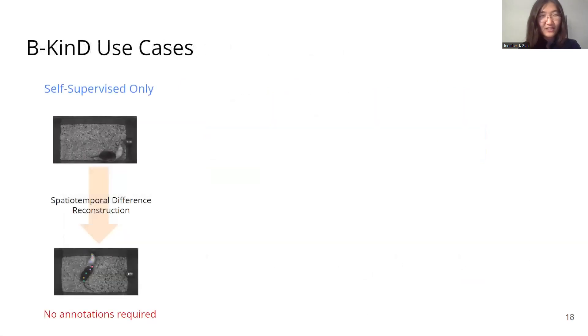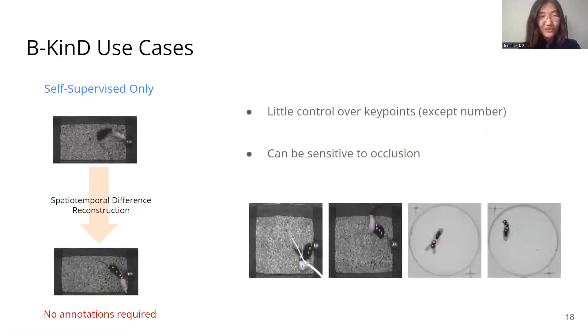Since BeKind doesn't require any human annotations, it can be applied directly to any behavioral video with quasi-stationary backgrounds. This can quickly provide keypoints for prototyping. But there is little control over the keypoints, and our keypoints can be sensitive to occlusion.